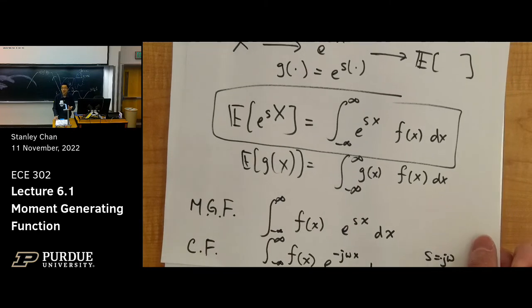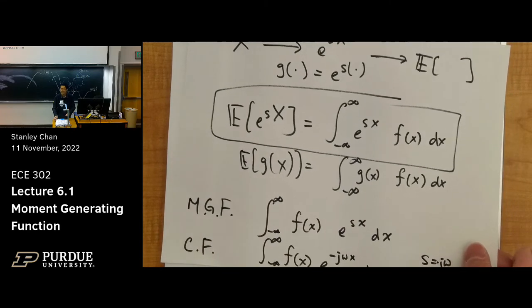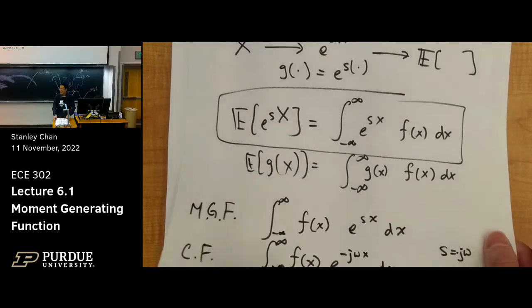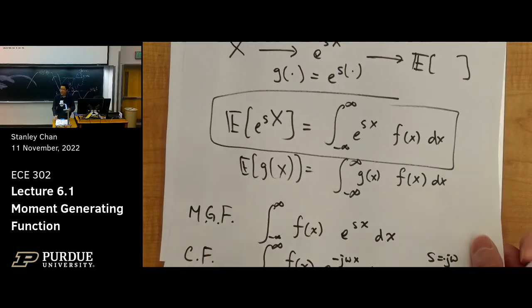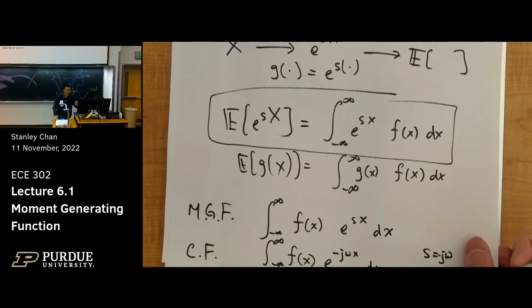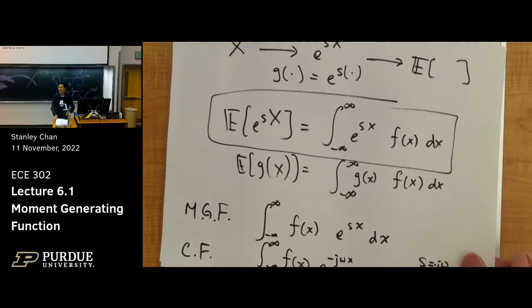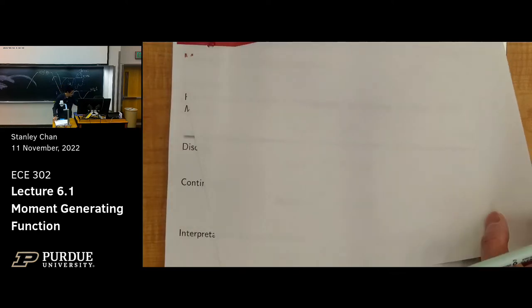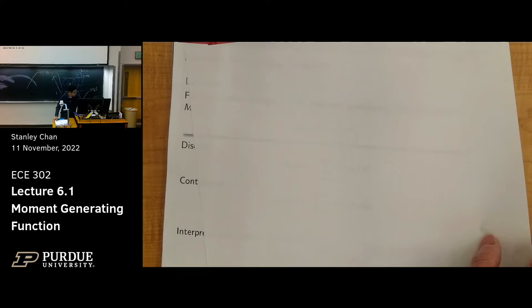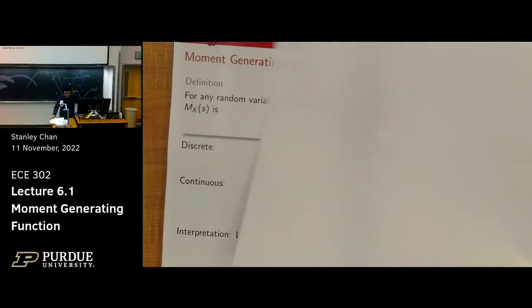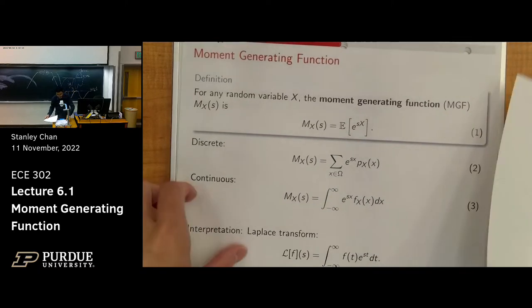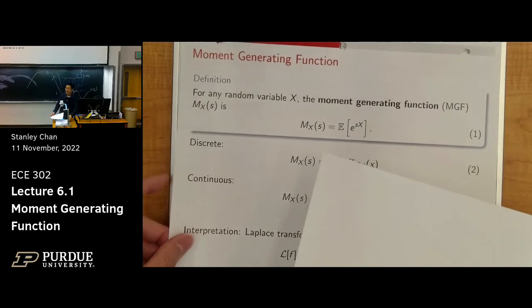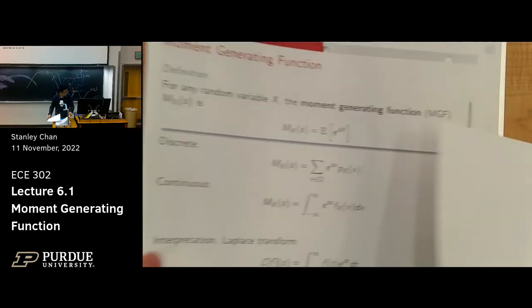Now if I tell you a random variable, just plug it in and do the calculation — and you have the table. But you will complain that you pay so much tuition and I'm not teaching you examples. So let's do the examples.